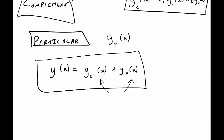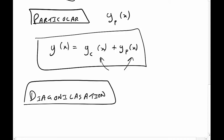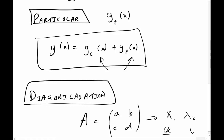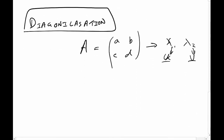The first method we'll look at is diagonalization. Going back to our linear non-homogeneous system, we take our matrix of coefficients — say a 2×2 matrix — and pull out its eigenvalues and eigenvectors. We then diagonalize the system. In the last video I showed how to diagonalize a system, and we'll build on that to come up with a way of solving our non-homogeneous case.